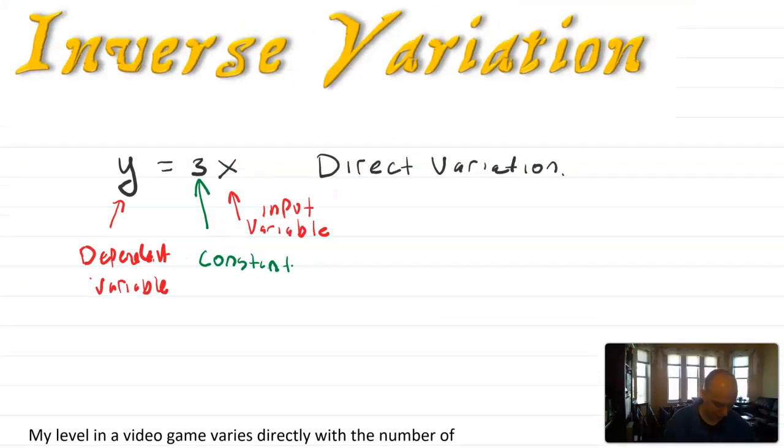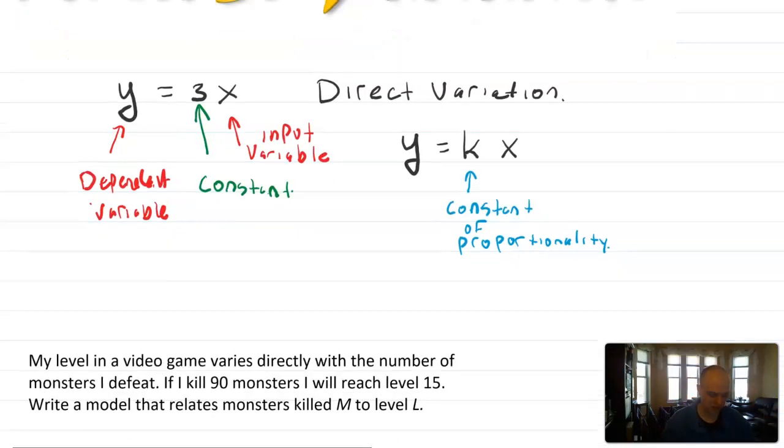The general format for direct variation relationships is going to be the format y equals kx, where k is the variable letter we usually use for that constant. You can use any letter for all of these. Often it's not y and x, it's just different letters. Sometimes this thing is called the constant of proportionality, because the idea is that those two variables are proportional to each other. As one grows, the other grows, and that constant relates how those things are growing together.